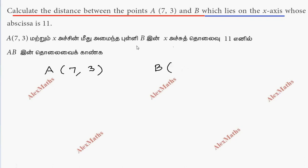If point B lies on the x-axis, the x-value is 11, but the y-value is 0.